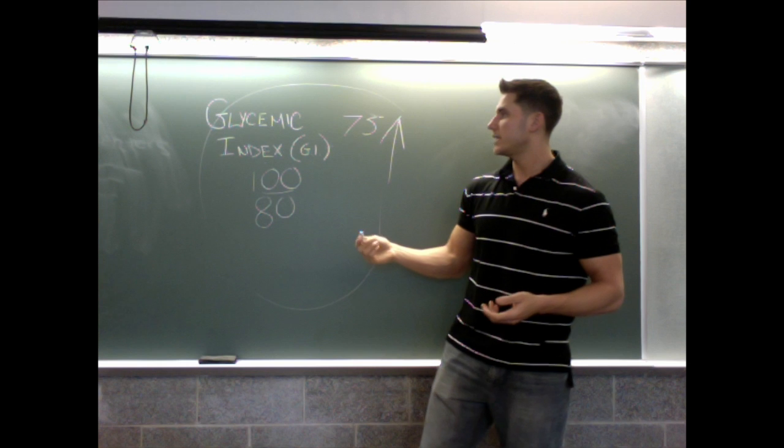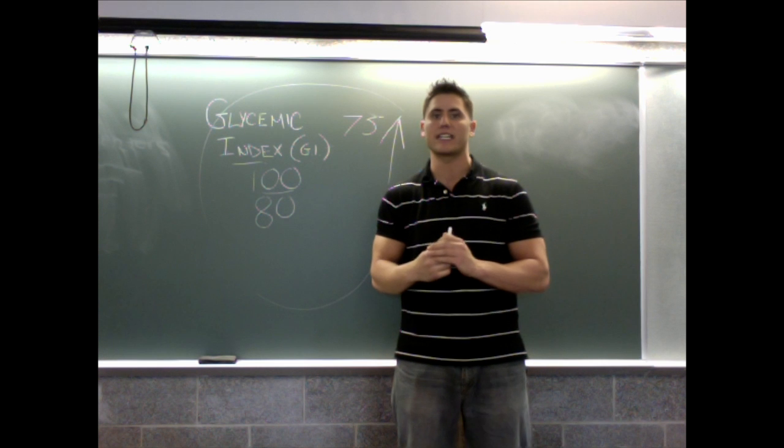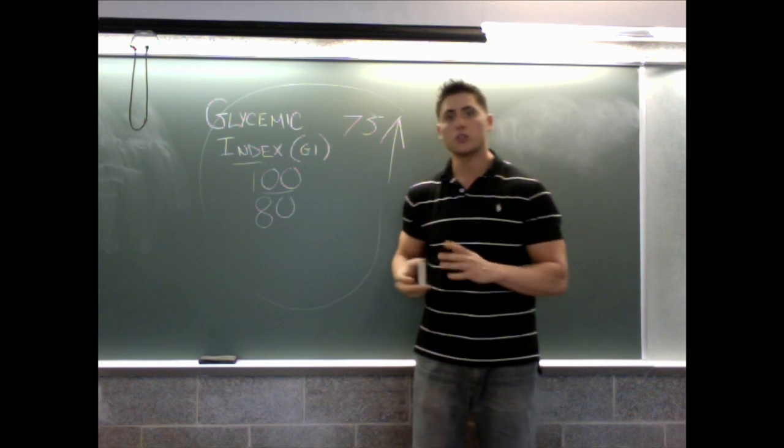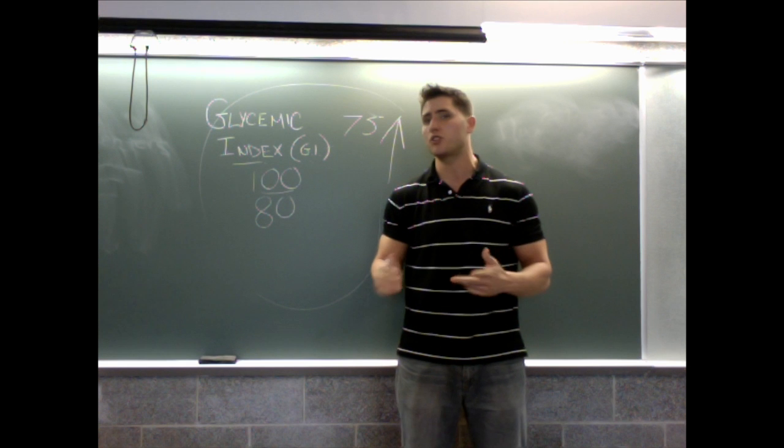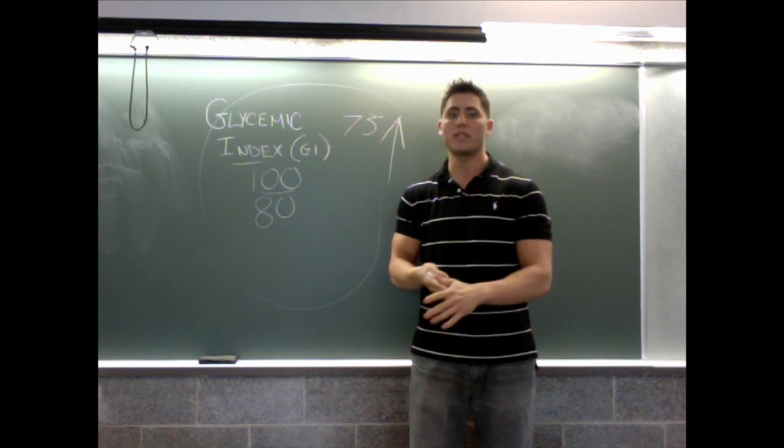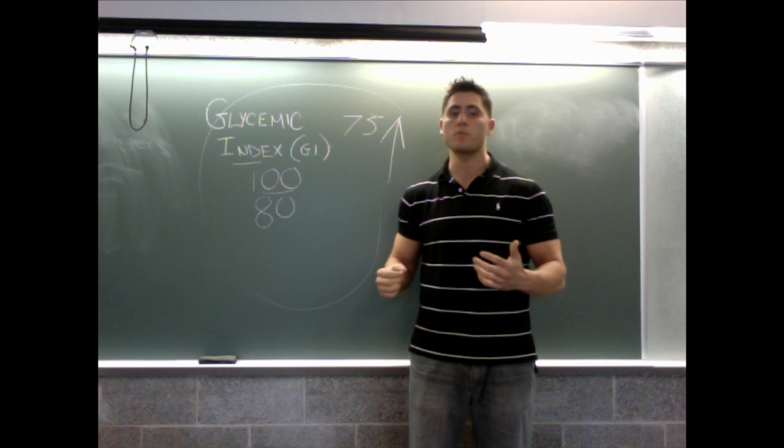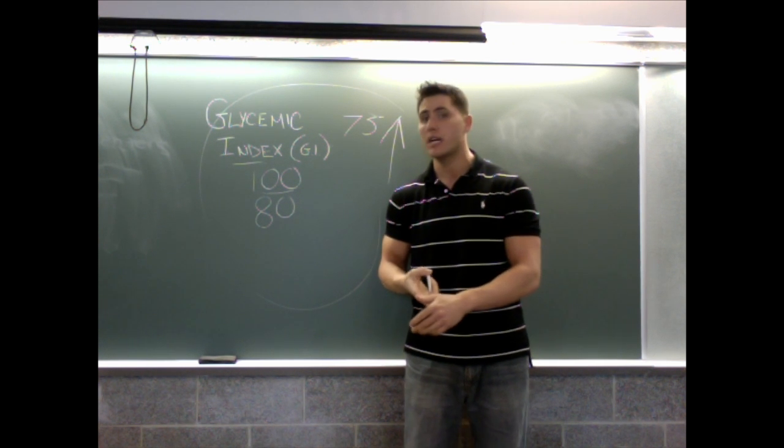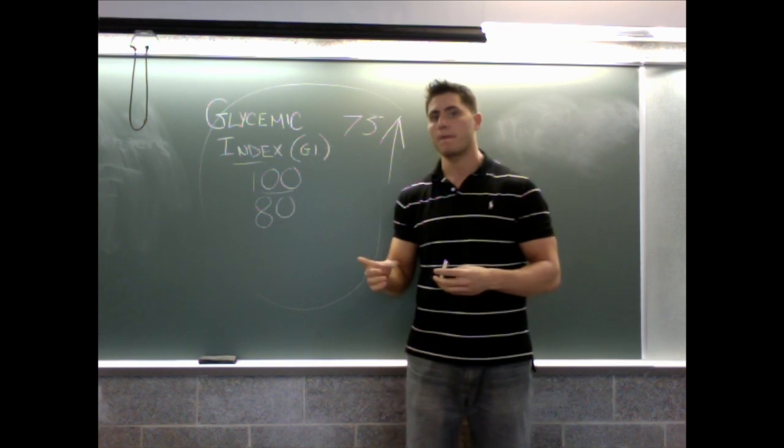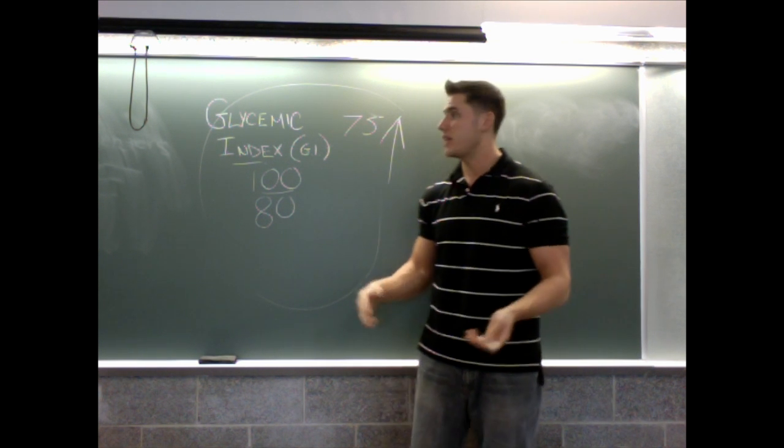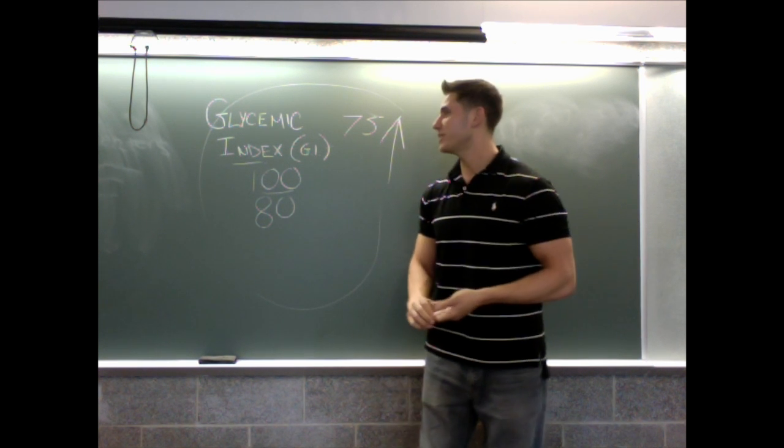And this also takes into account another index known as the satiety index, which is how satisfied you feel after eating something. So something that's looked at as a high GI carb, or even sometimes known as a dirty food, like a white potato or white rice, they are actually higher on the satiety index than oatmeal, which is supposed to keep you fuller and satisfied longer. But research shows that a white potato will have more of a satiety effect than oatmeal will.